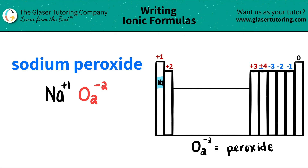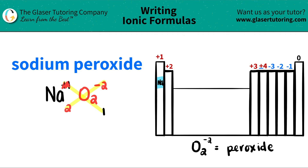Now we are ready to write the formula. We're going to take our charges and crisscross them down — it's a little trick to see how many of each component I need. So this plus one crisscrosses down, telling me I only need one peroxide, the O2, and this negative two crisscrosses down, telling me I need two sodiums. Don't worry about the charges up top; you're just using these as counting numbers.